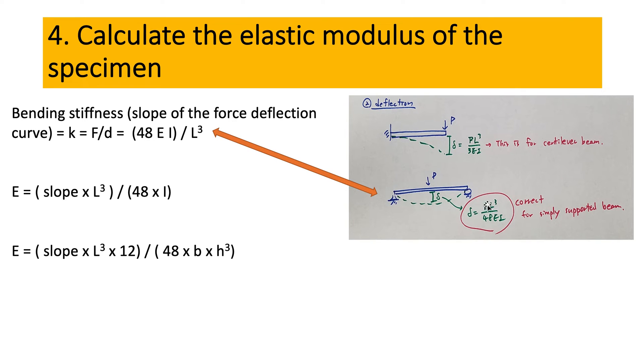So you need to divide P by delta. It's going to be 48 EI divided by L cubed. This is the bending stiffness, which is the slope of the force deflection curve. This is force, this is deflection.